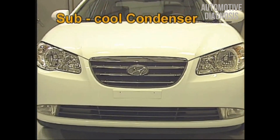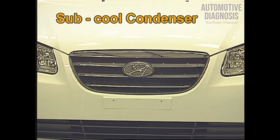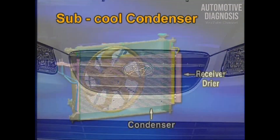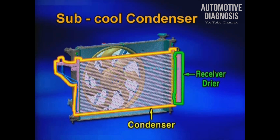For the condenser, the sub-cool type is applied. The sub-cool condenser is an integrated type having the receiver dryer and the condenser, so that the cooling performance is superior to the old type.